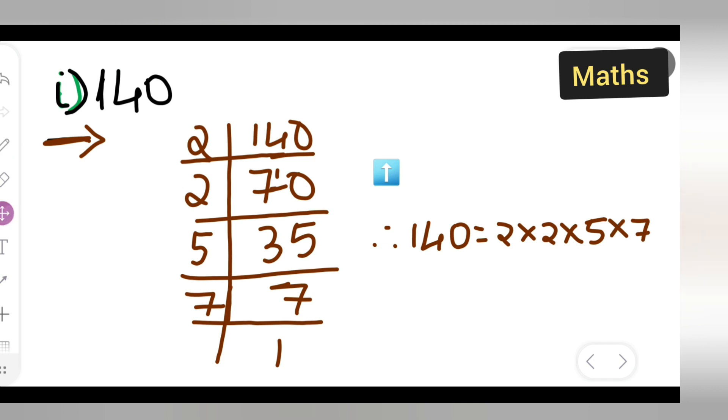What I have done here is 140 equals 2 multiplied by 2 multiplied by 5 multiplied by 7. Now, since 2 comes twice, I have written 2 squared multiplied by 5 multiplied by 7. This is the way you have to express this number as a product of its prime factors.